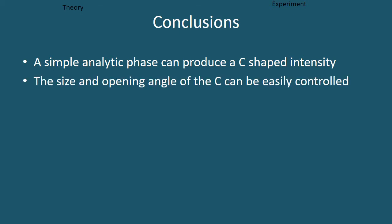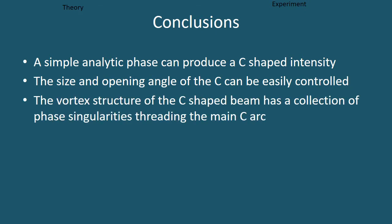The main conclusions of our paper are that a simple phase can produce a C-shaped intensity, the size and opening angle of this C-shape can both be easily independently controlled, the C-shape vortex beam has a collection of phase singularities threading the main intensity,